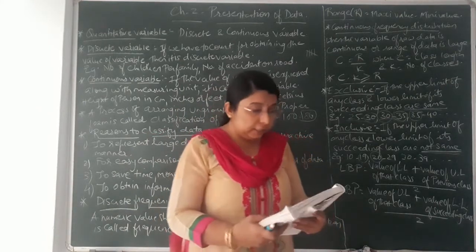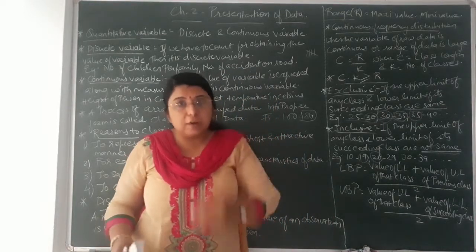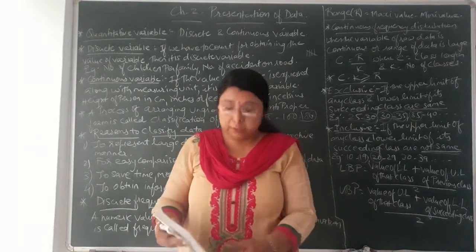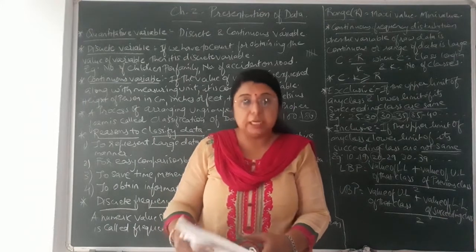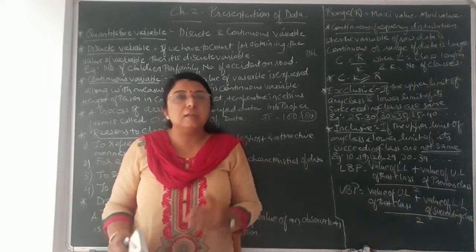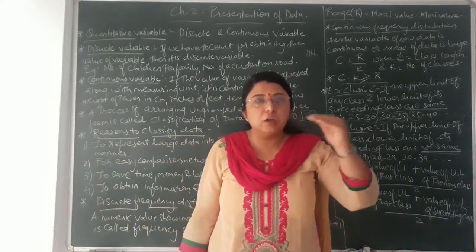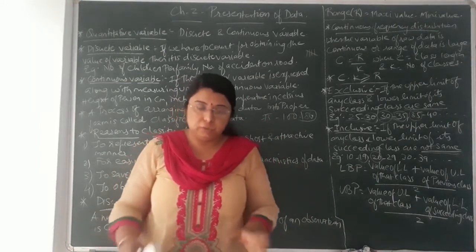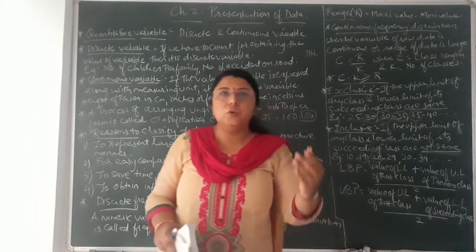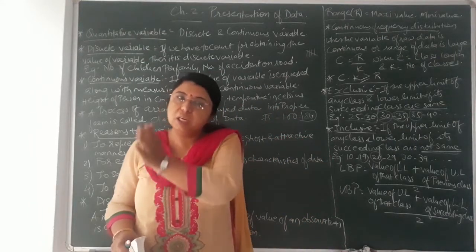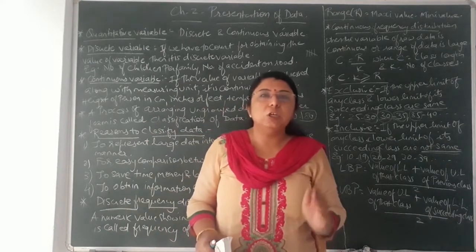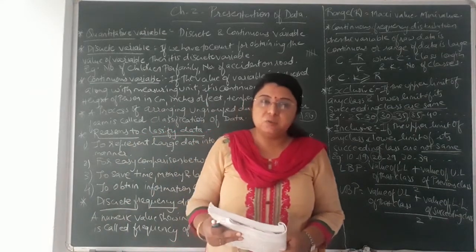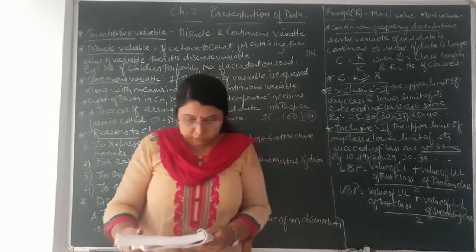The maximum value is 265, so the last class should go up to 275. There are 8 classes total, and the last class must include the maximum value while the first class includes the minimum value. After arranging classes, apply tally marks, count the frequency, and the total frequency should equal the total number of data — which is 28 — confirming the answer is correct.